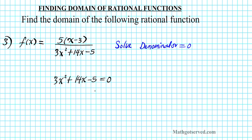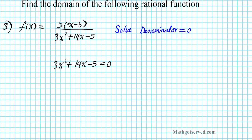This is a quadratic equation. There are different ways we can solve a quadratic; the first method you always want to use is the factorization method. Let's hope that this expression is factorable so we can simply find the values to exclude from our domain. We're going to use the x-game or AC method to factor this quadratic equation.